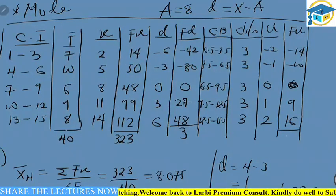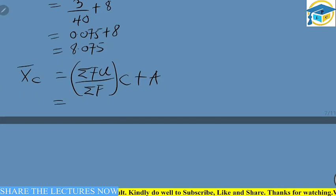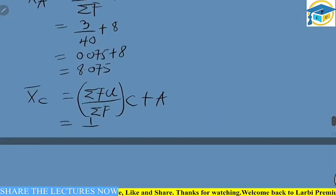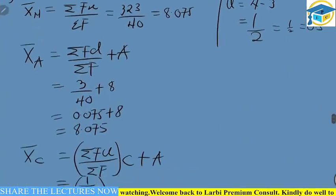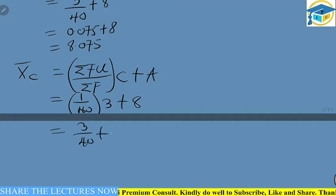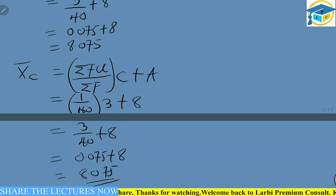We find the summation of all f*u values: −14 + (−10) + 0 + 9 + 16 = 1. So the summation of f*u is 1. Using the coding method, the mean equals (summation f*u / summation f) × class width + assumed mean = (1/40) × 3 + 8 = 0.075 + 8 = 8.075.